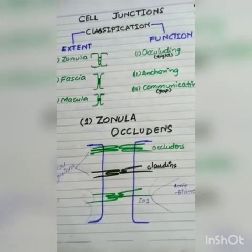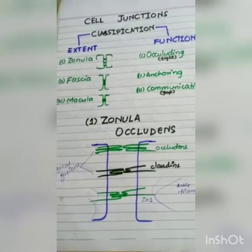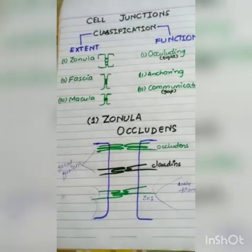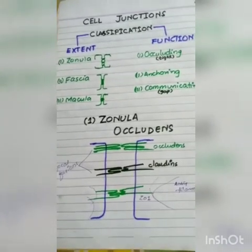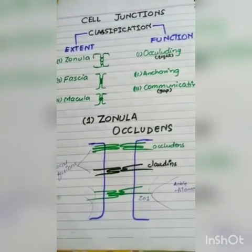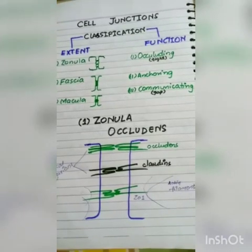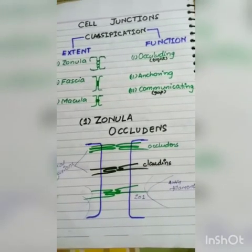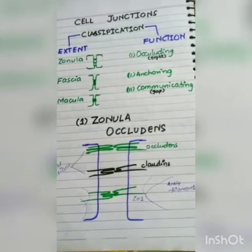The membranes form focal fusions at certain points, and both cells fuse, eliminating the intercellular space at those points. Inside the cytoplasm, actin filaments and glycoproteins are associated with this junction.